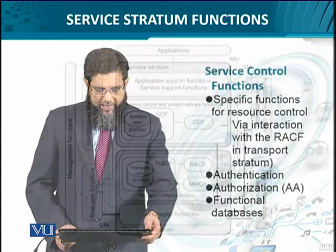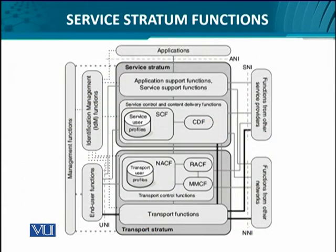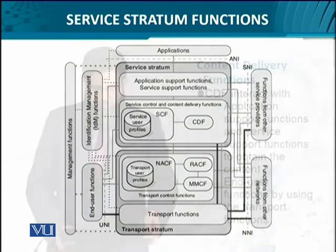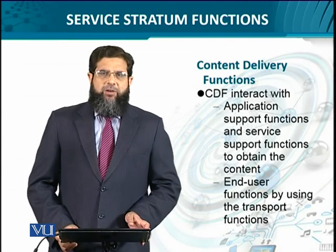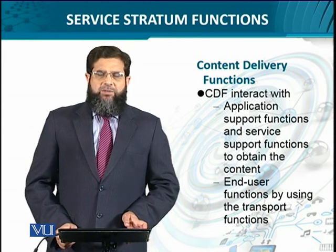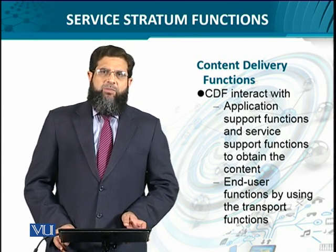Let's quickly go back and look at the overall concepts studied here. We have looked at how the service stratum is organized: we have the application and service support functions, the service control functions, and the content delivery functions. The content delivery function interacts with the transport stratum, and the service control function utilizes the functional database containing all the necessary authentication and authorization mechanisms. We have now summarized how the service stratum is organized, having already seen how the transport stratum is organized.